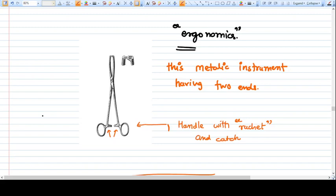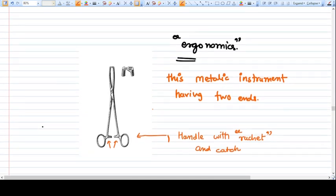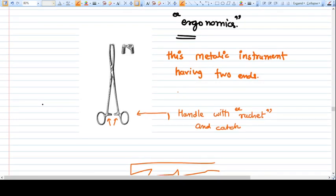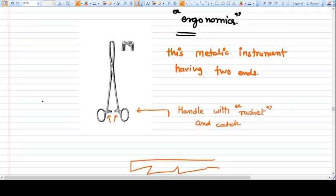Each and every perfect surgeon must understand the design of the instrument they are using - the ergonomics and how the instrument works. This is Alice forceps, a very important and useful forceps that is always there in every surgery. This is a metallic instrument having two ends.